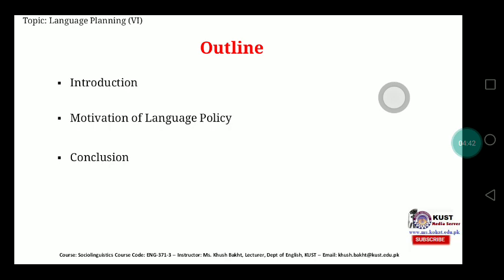In our previous lecture, the significant topic was the goals of language policy. The major linguistic and social goals that help in developing a proper language policy included: language purification, language revival, language reforms, language standardization, language spread, lexical modernization, technological unification, stylistic simplification, interlingual communication, language maintenance, and auxiliary code standardization — 11 different goals which motivate policymakers to develop language policy. The question posed was: what are the motivations that make us determined enough to develop a language policy?